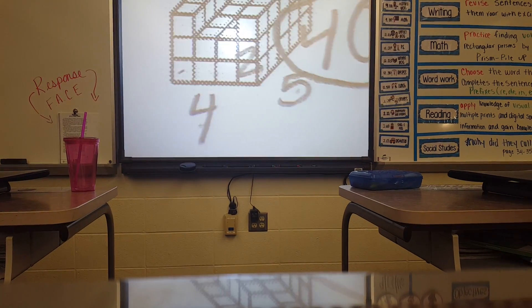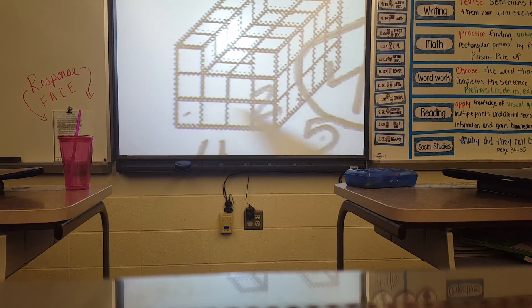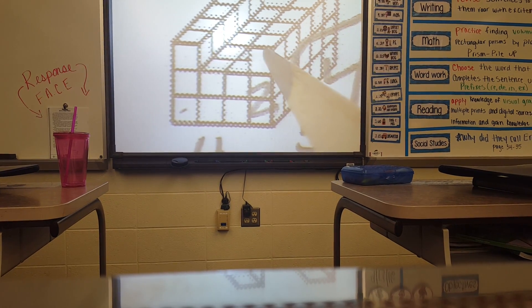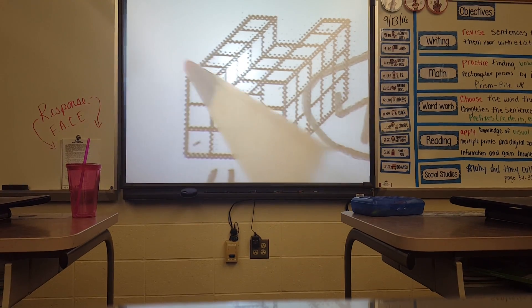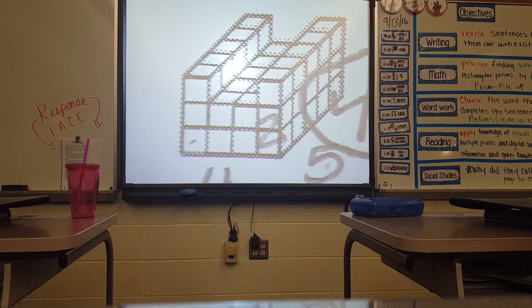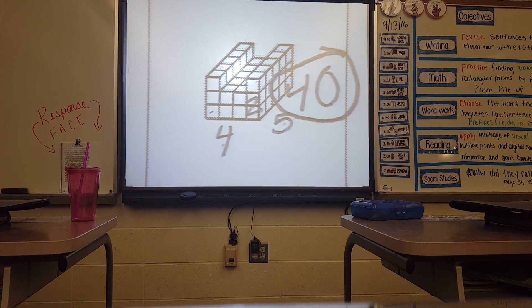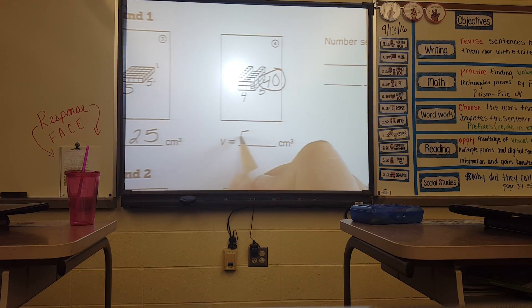Now I need to look at these pieces up here. I can just count them. I already have 40 down here, so 41, 42, 43, 44, 45, 46, 47, 48, 49, 50. My volume for the entire shape is 50 cubic centimeters.